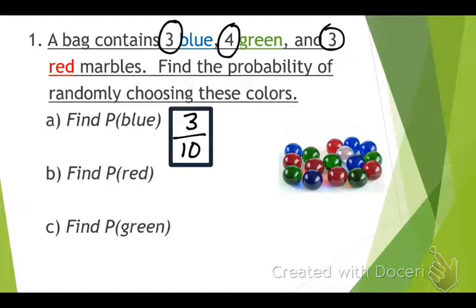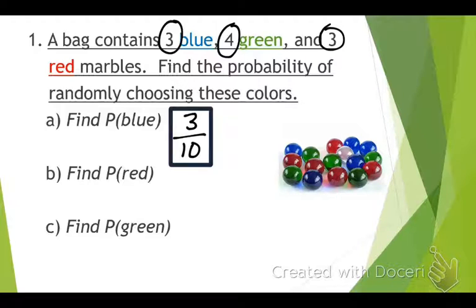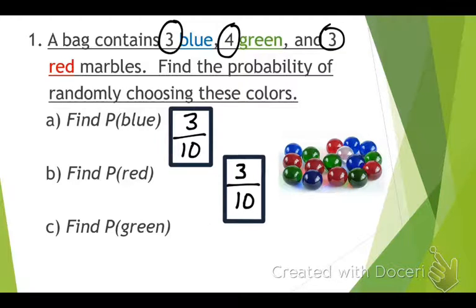This is all theoretical probability, because in theory that's what would happen — if I pull it out ten times, three of them would probably be blue. Experimental would be if I was actually doing the experiment. The probability of finding a red: there are three red marbles and all add up to ten, so there's a three out of ten chance of pulling out a red.